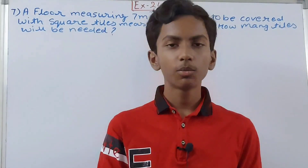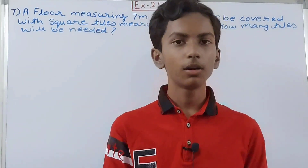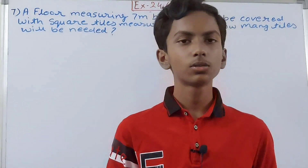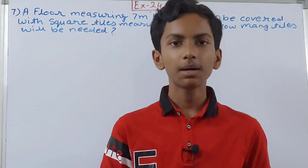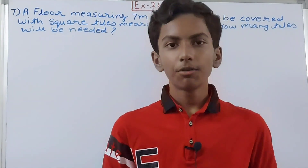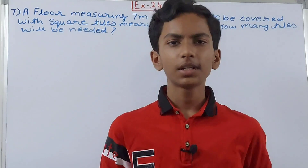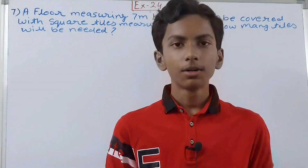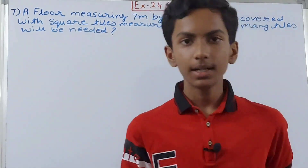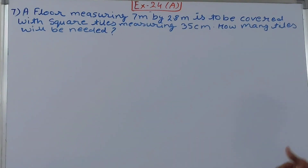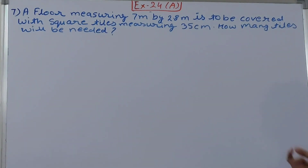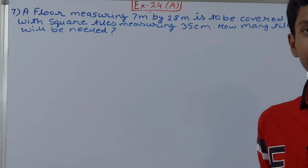Hello friends, welcome back to my YouTube channel 'Unlock Your Learning'. In this video we are going to solve ICC Mathematics Class 7, Chapter 24 - Area and Perimeter, Exercise 24A, Question 7. A floor measuring 7 meters by 2.8 meters is to be covered with square tiles measuring 35 centimeters. How many tiles will be needed?